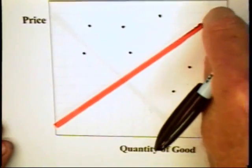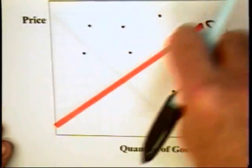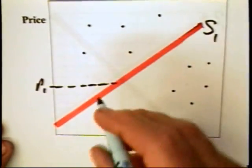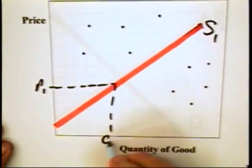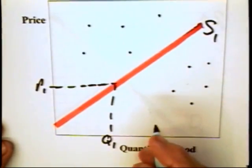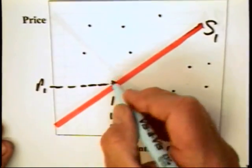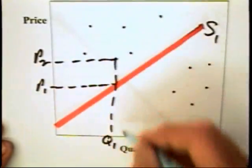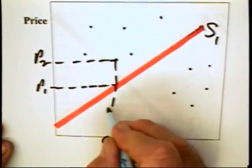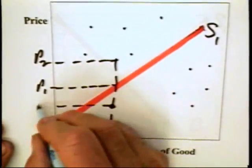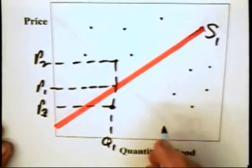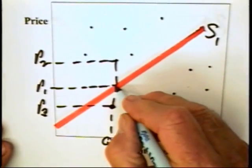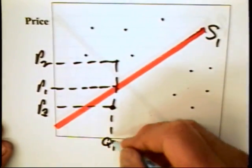Again, think of the supply curve as a razor's edge. Producers are willing to accept, at a minimum, a price of P1 for quantity Q1. If they're willing to accept as little as P1 for this quantity, then they should be willing to accept a price of P2 for that same quantity. They're unwilling to accept this price simply because it is below their boundary. It's also because this price, P3, is below the marginal cost of producing that Q1 unit.